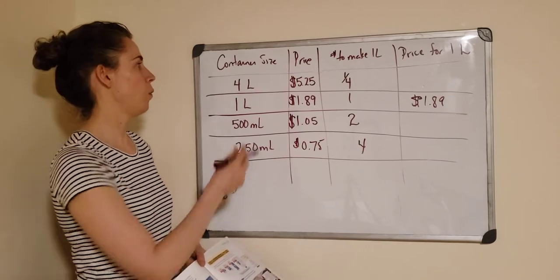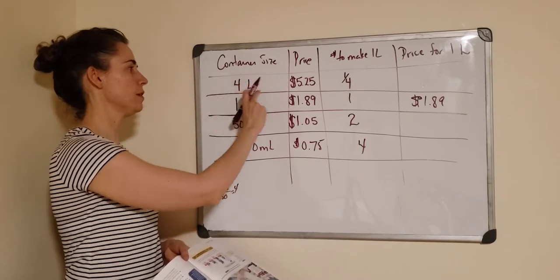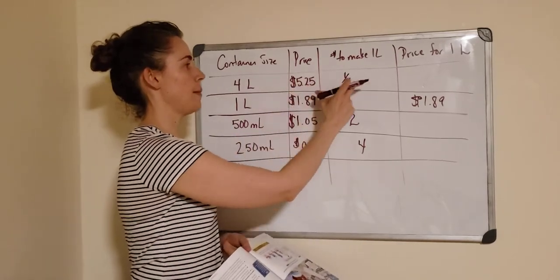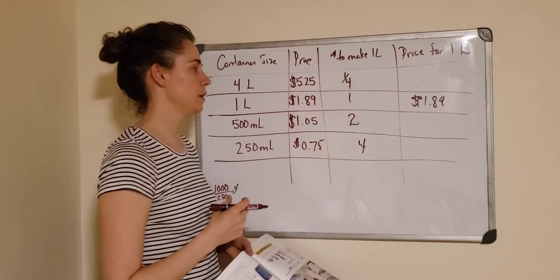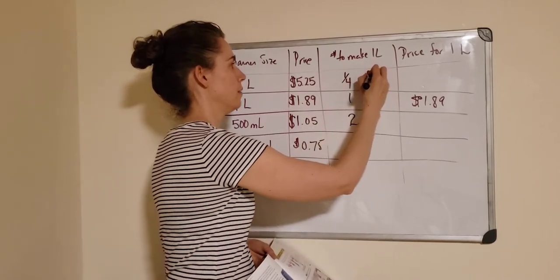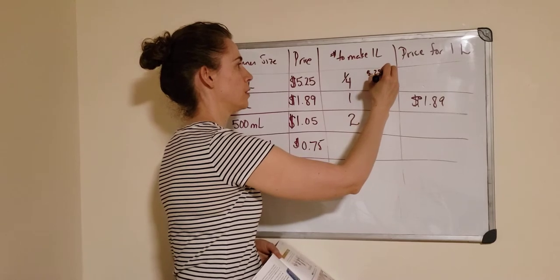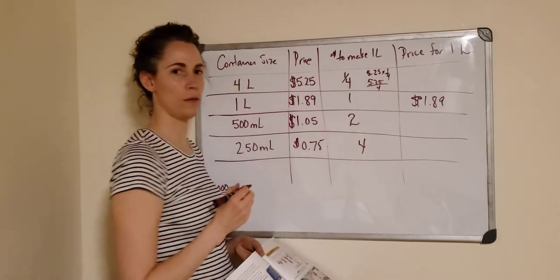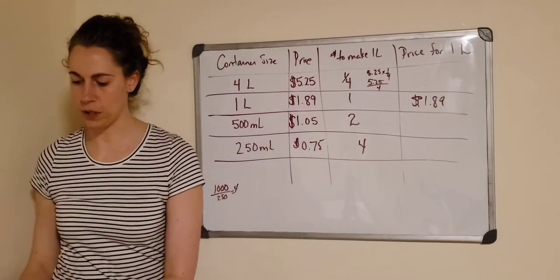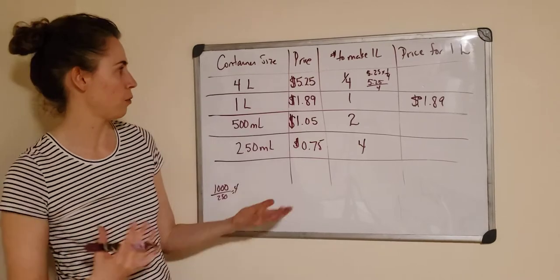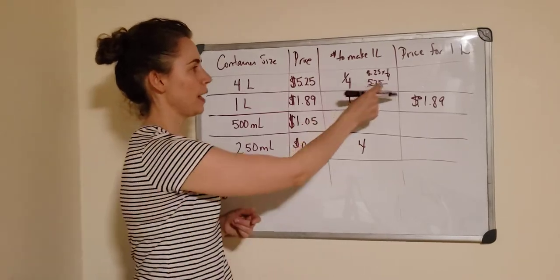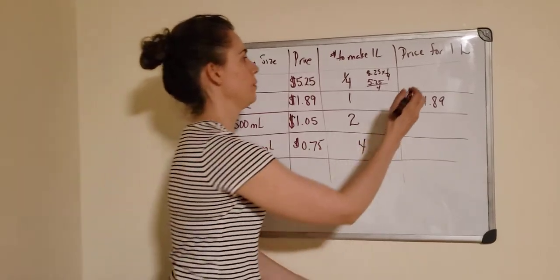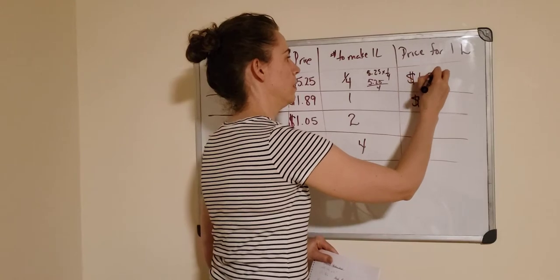Let's go back and do our pricing now. We know that one quarter of this is a liter. You can take this price and multiply it by one over four, which is the same as taking $5.25 and dividing it by four. I know most of you would know that right off the bat - you just divide it into four because there are four parts. When you take $5.25 divided by four, you get $1.31.